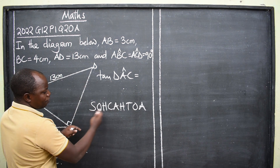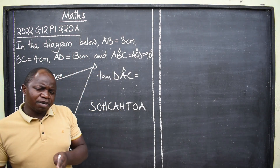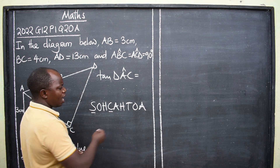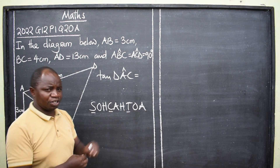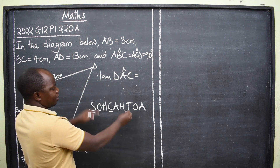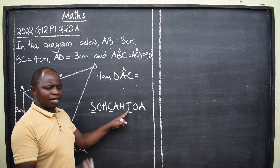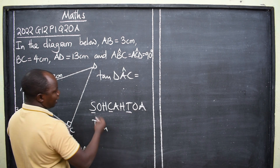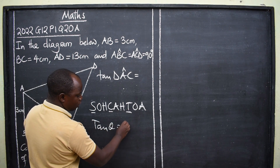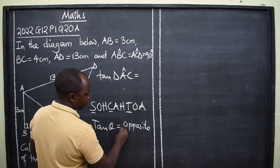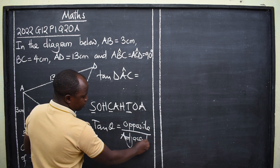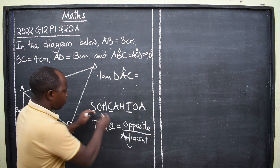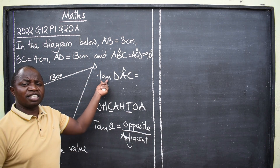We have three ratios in trigonometry: sine, cosine, and tangent. The one we are interested in is tangent. Tan of any given angle theta equals opposite over adjacent. Sine is opposite over hypotenuse, and cosine is adjacent over hypotenuse. We are not going to use sine or cosine because the question demands us to find tan only.